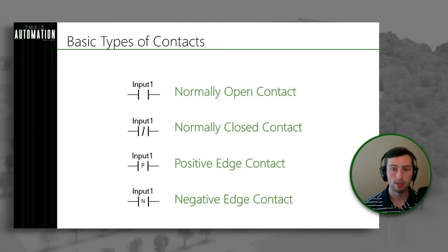That's the basic introduction to ladder logic. I hope that was helpful. Know that power flow goes from left to right, contacts are a combination of inputs and logic, and coils are our outputs whether they're internal or directly tied to I/O cards. From there we can build out a really powerful program to control an entire machine using just these rungs — it's a really powerful tool. And hopefully you can see how it can also be a really powerful diagnostics tool: if an indicator light wasn't coming on but you thought it should be, you could easily walk back through those contacts to see which one was not turning on.